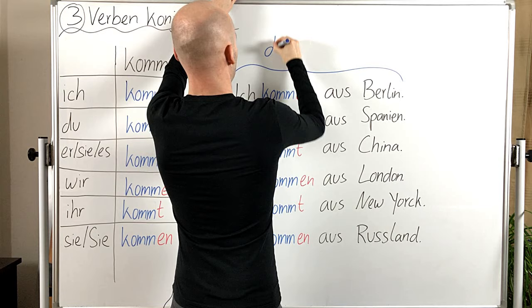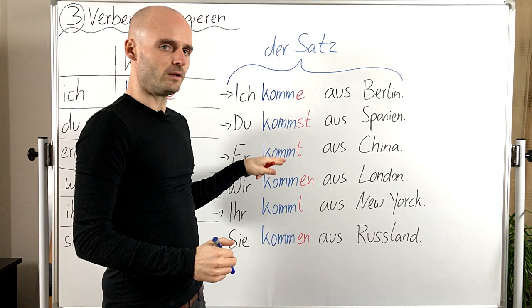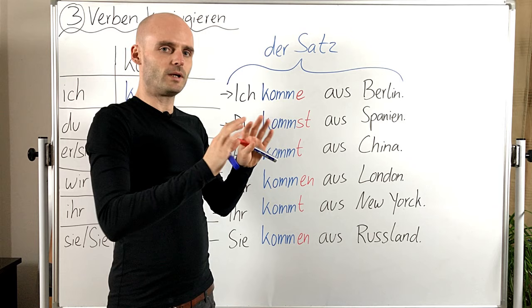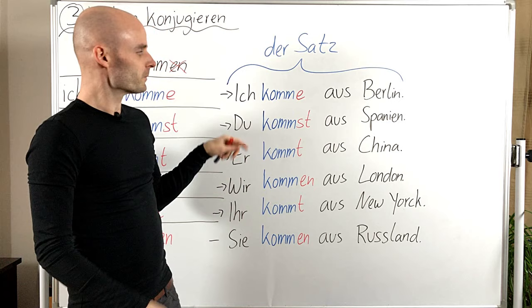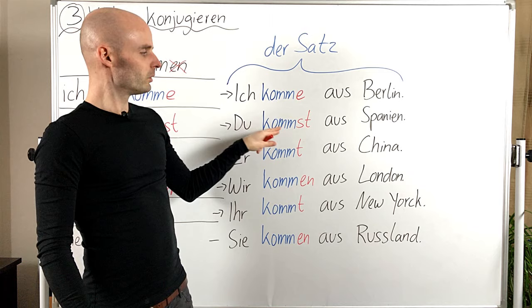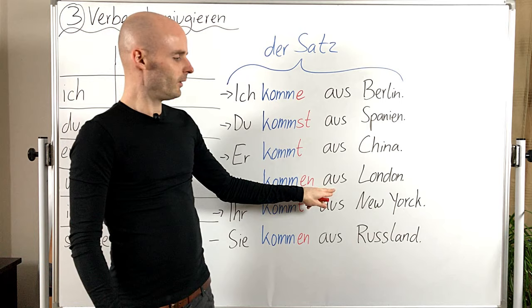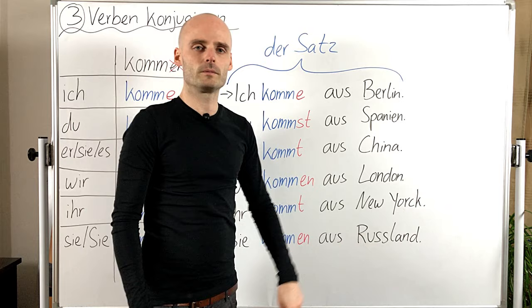Here I have a couple of example sentences. The verb in a German sentence is always — well, for now always — in position two. That's super important. So: Ich komme aus Berlin. Du kommst aus Spanien. Er kommt aus China. Wir kommen aus London. Ihr kommt aus New York. Und sie kommen aus Russland.